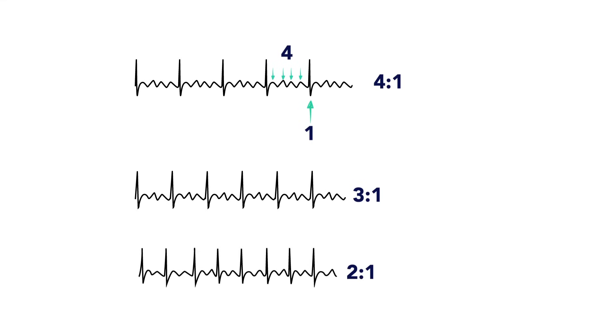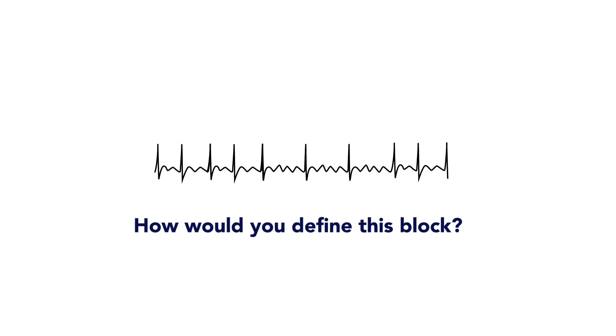Take this strip for example. You could count 4 flutter waves for every QRS complex, and so we say this is atrial flutter with a 4-to-1 block. Here's another strip with a 3-to-1 block, and another with a 2-to-1 block. What about this strip? How would you define this block?